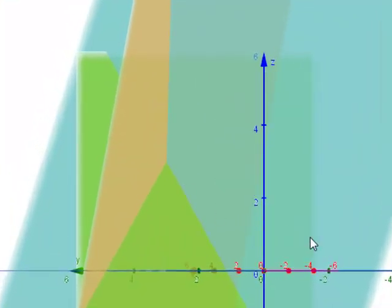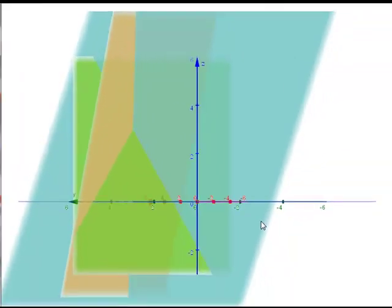So this is geometrically what's happening in a system of three equations with three variables.